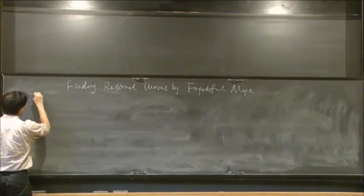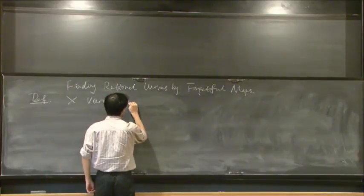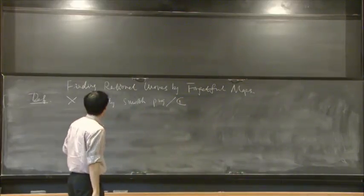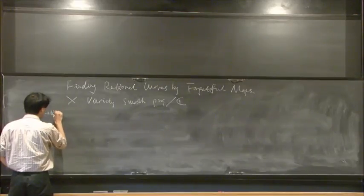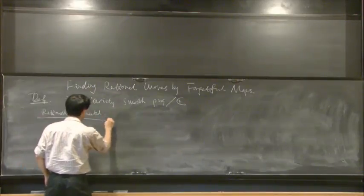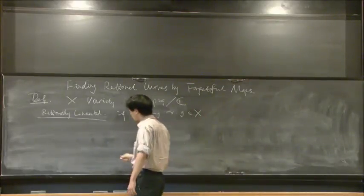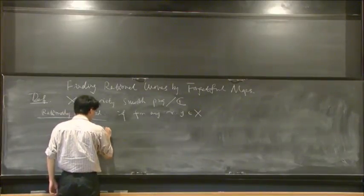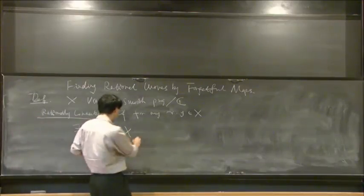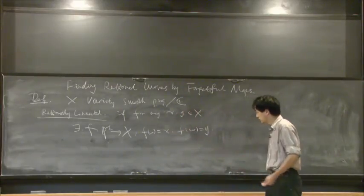We first introduce a basic definition: a variety that is smooth and projective over the complex numbers C. We say it is rationally connected if for any two points of it there is a rational curve inside X — that is, a map from P¹ to X — such that it connects these two points, with f(0) = x and f(∞) = y.